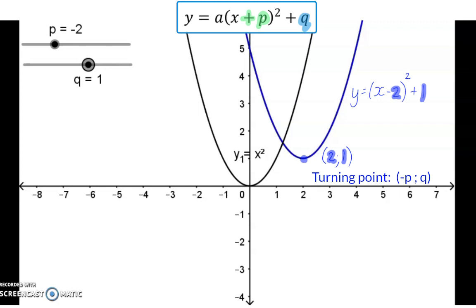When the graph moves horizontally, the axis of symmetry should move with the graph. In this case, our axis of symmetry is on the turning point, and that means on the line x is equal to 2. So we can also make the conclusion that the axis of symmetry always lies on the line x is equal to minus the p-value.